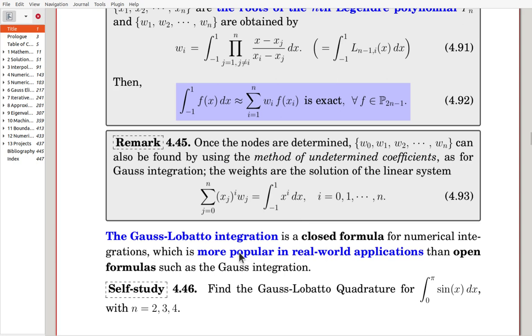The Gauss-Lobatto integration is a closed formula. The closed word came from the fact that the edge points are involved, so it is called closed formula. A closed interval is treated, so it is a closed formula. The Gauss-Lobatto integration is more popular in real-world applications than open formulas such as the Gauss integration.